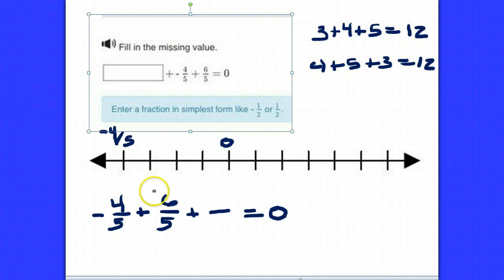And 0. So let's add 6 fifths. 1, 2, 3, 4, 5, 6. We end up at 2 fifths.